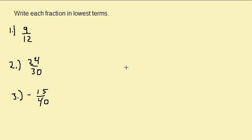Let's take a look at writing fractions in lowest terms. Here we have three fractions and we want to write them in lowest terms. What we do is we want to find the greatest common factor — the largest number that will divide into the numerator and denominator evenly. So if we look at 9 and 12,